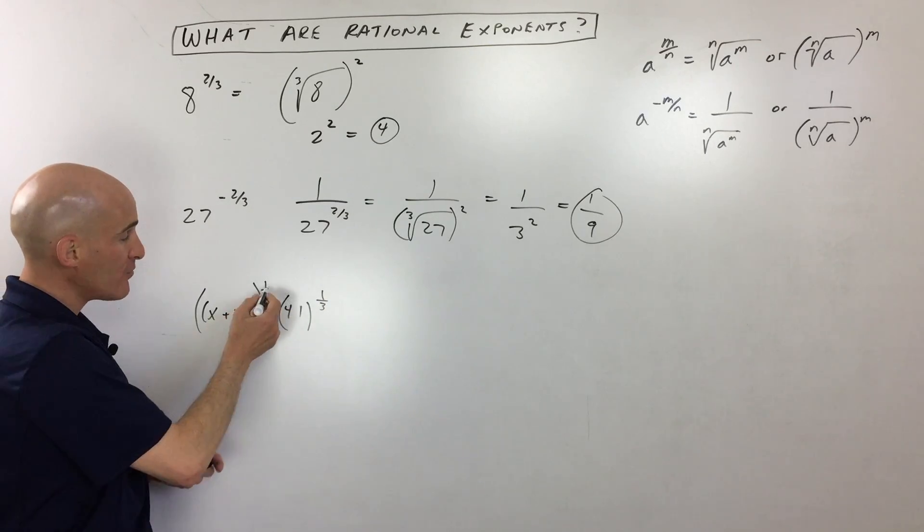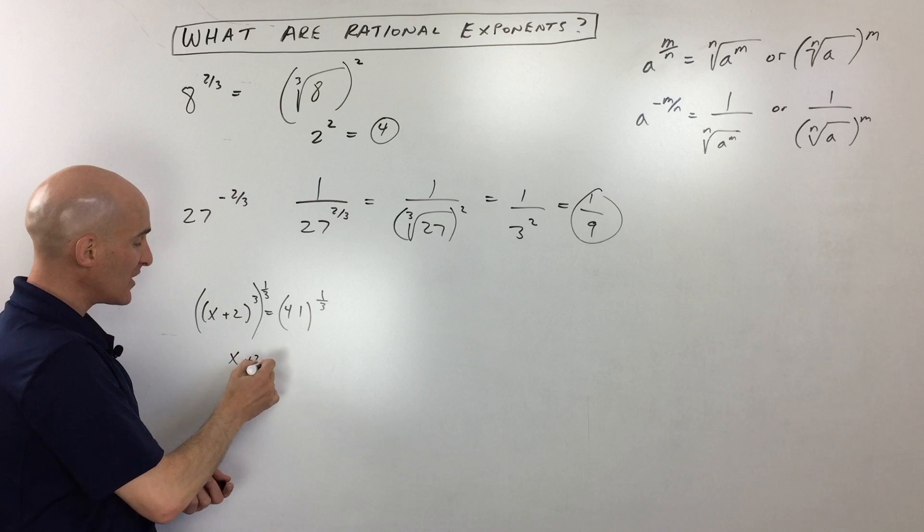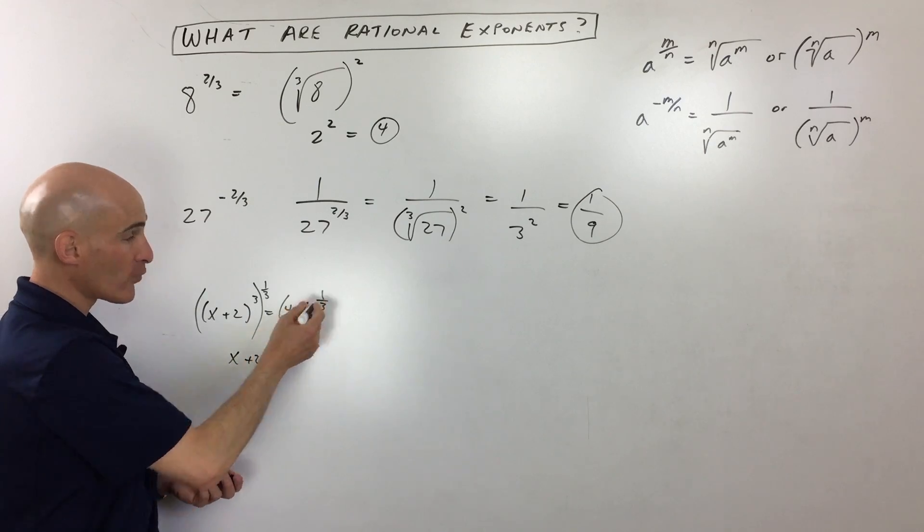Because power to power, you multiply. 3 times 1/3 just gives you 1. So you get x plus 2 equals 41 to the 1/3.